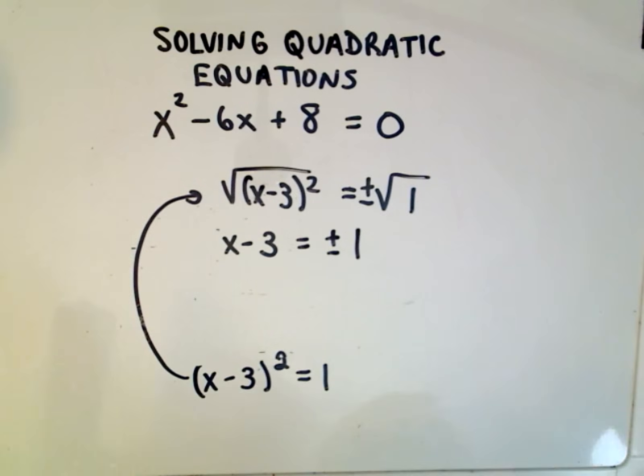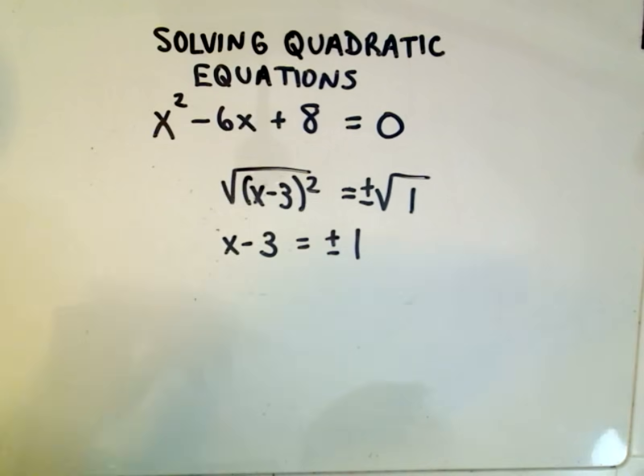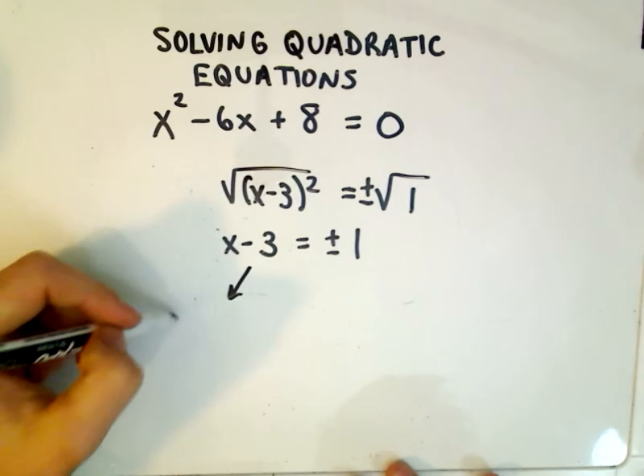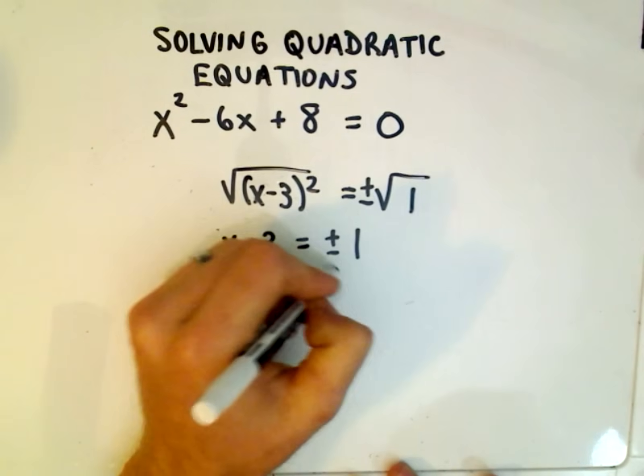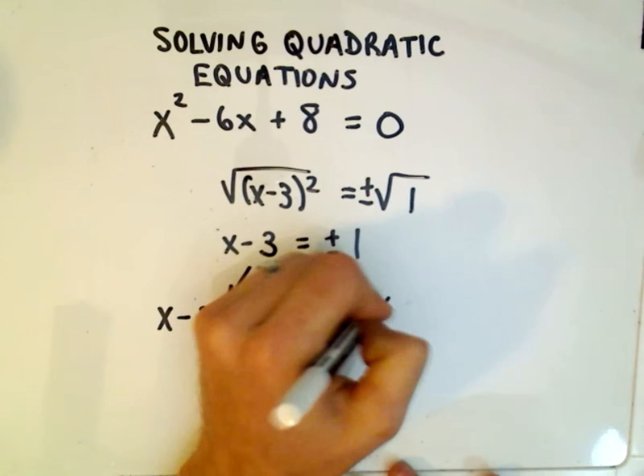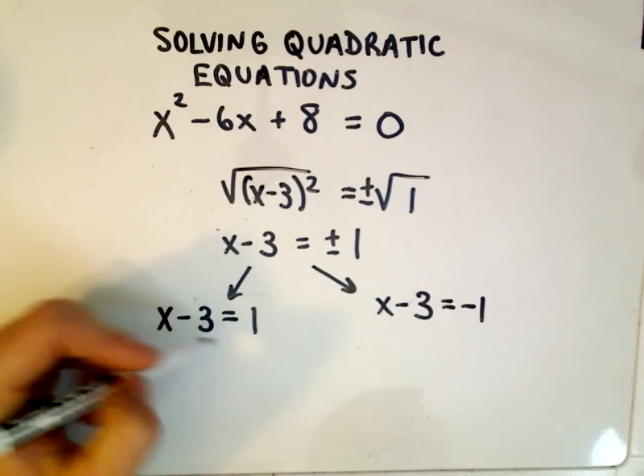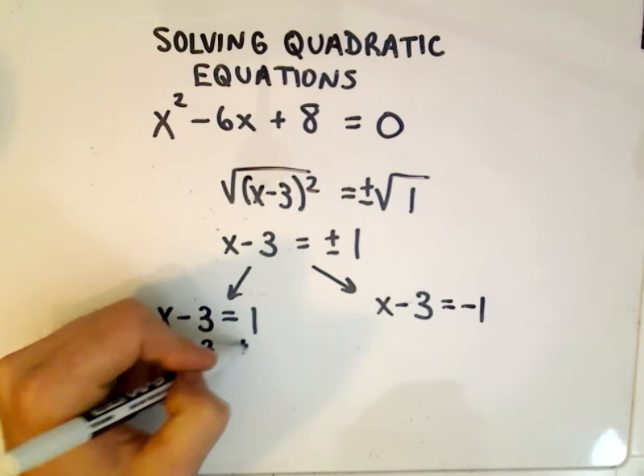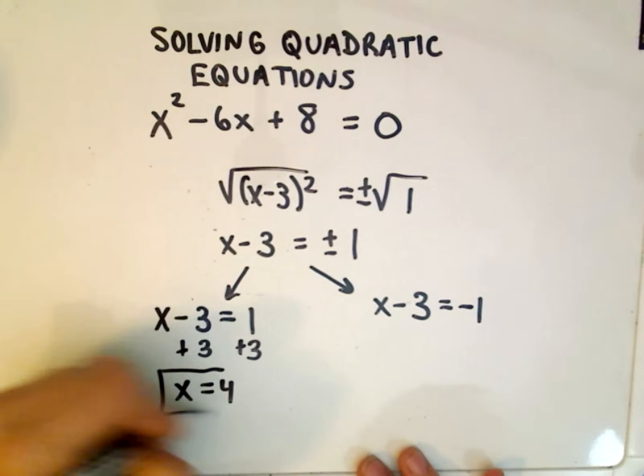So now we get our two separate equations that we have to solve. One of the equations that we'll have to solve will be x minus 3 equals positive 1. And then the other equation we'll have to solve will be x minus 3 equals negative 1. So we'll simply add 3 in both cases.